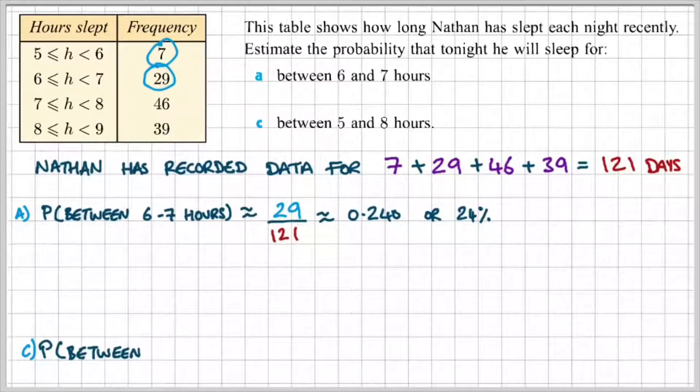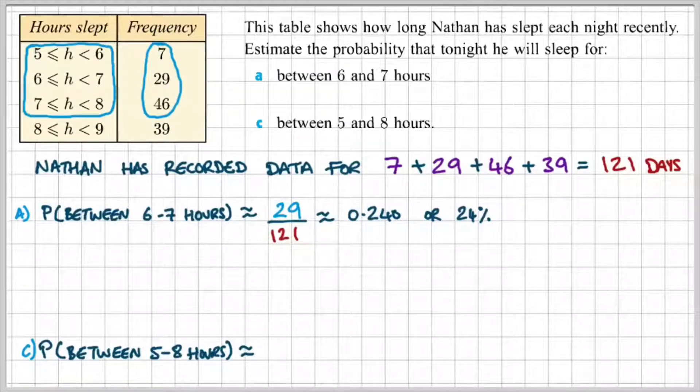Okay, so for part C, we're trying to find out the probability that Nathan slept for anywhere between 5 to 8 hours. So, we look at a table of values, we're looking at three different class intervals between 5 to 6, 6 to 7, and 7 to 8.